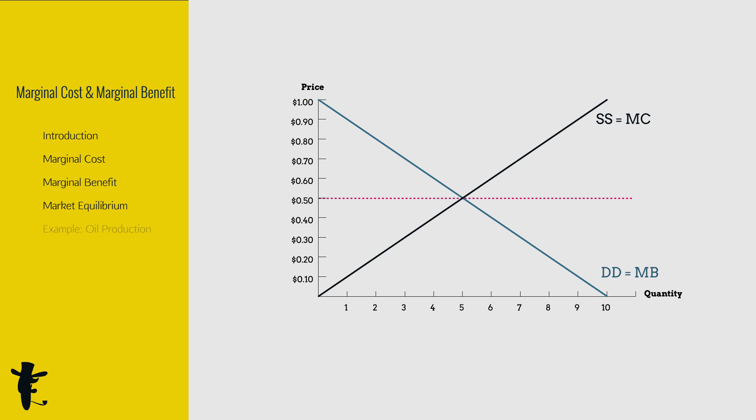As a seller, if you are producing three units, should you increase production? Yes! The fourth unit costs you $0.40. The price is $0.50. You can still make a profit. Produce! What about the fifth unit? Cost is $0.50, price is $0.50. You break even. Produce!